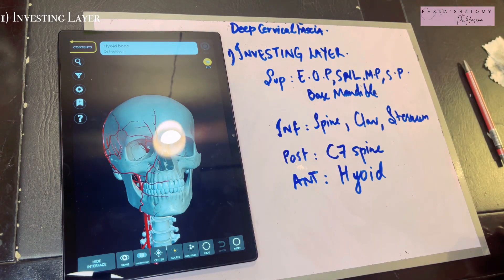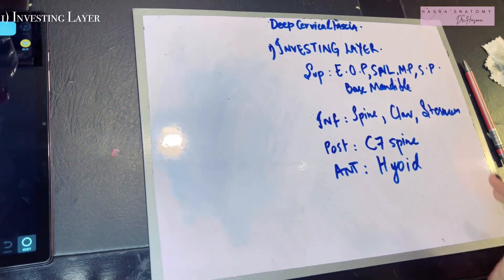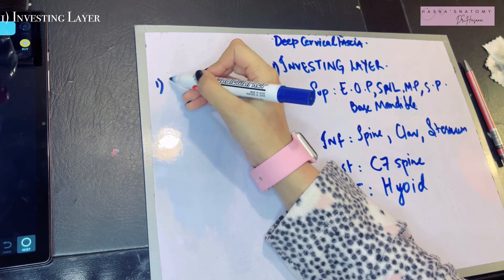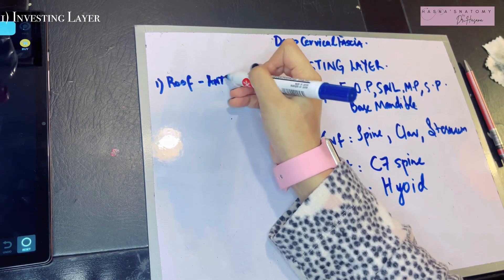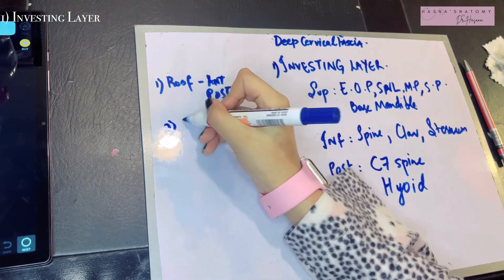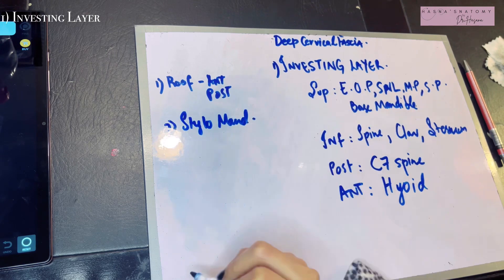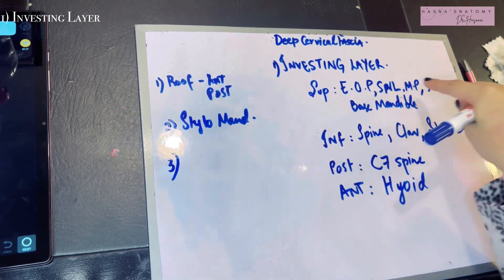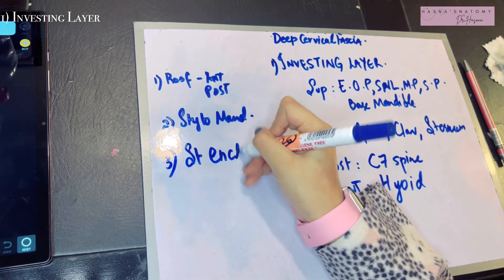Now let's talk about some special features of the investing layer. The most important feature is that it forms the roof of both the anterior and posterior triangles of the neck. Another important thing is that it forms the stylomandibular ligament, which we'll talk about shortly. The third important part is the structures that it encloses.